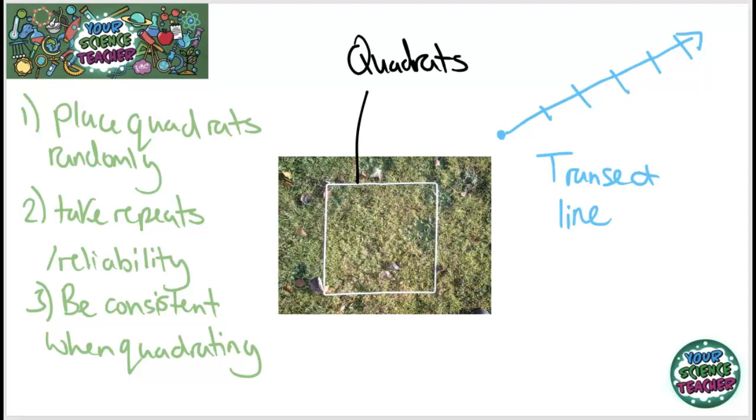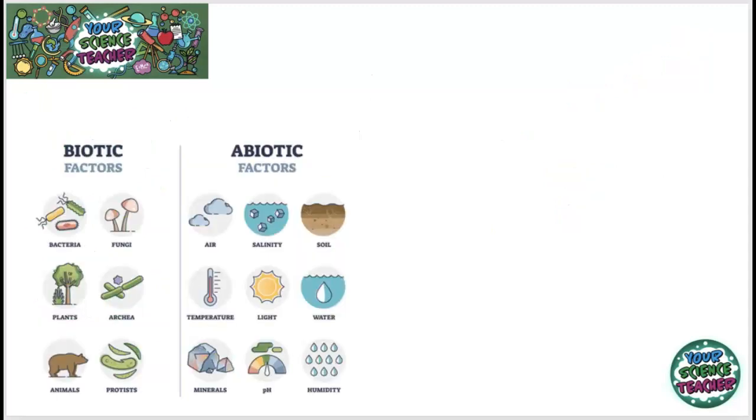Now there are a bunch of different biotic and abiotic factors that can affect the stability of an ecosystem. Now a biotic factor is anything that is living, so anything that's living that can affect the stability of a community is known as a biotic factor.